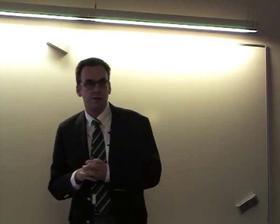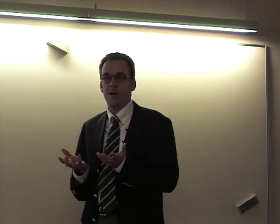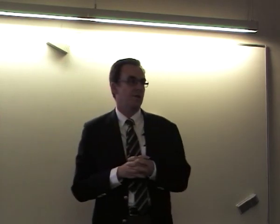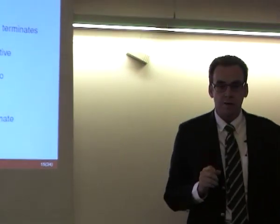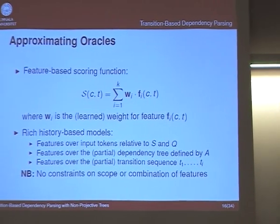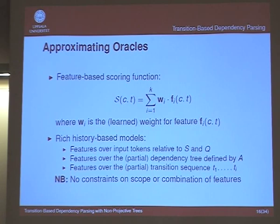Of course, in the real world, oracles are hard to find. The whole thing depends on how well we can approximate this oracle using machine learning. The way people normally do this is with a feature-based scoring function S(C, T) measuring whether transition T is a good action in configuration C. Typically this is a linear classifier where we define a vector of features — properties of the configuration and transition — and a learned weight for each feature.